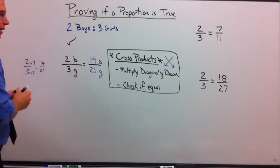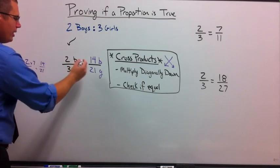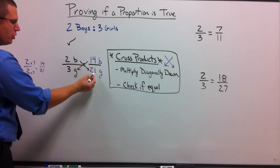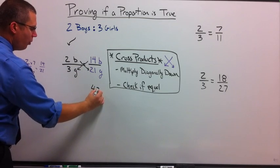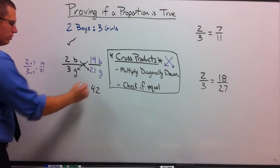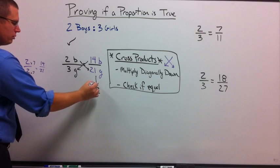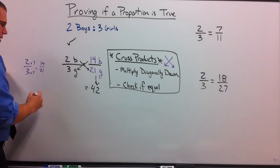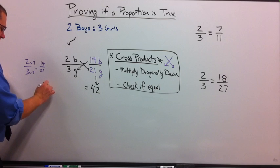And then check if it's equal. So what I do is simply this. Multiply diagonally, multiply diagonally. Two times 21 is 42.